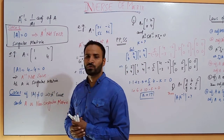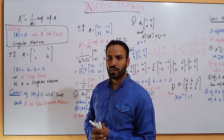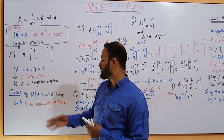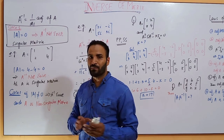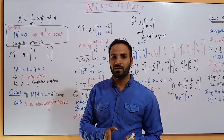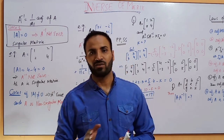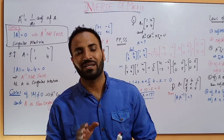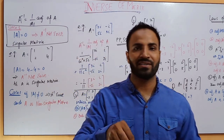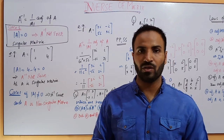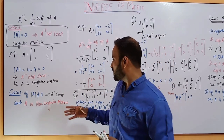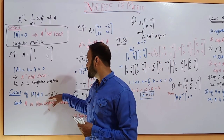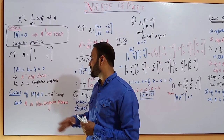In Case 2, if the determinant of A does not equal 0, the matrix will be non-singular, and in this case we can find A inverse.